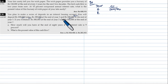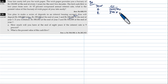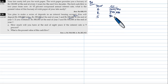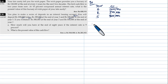Deposit rupees 2 lakh at the end of year 2, and rupees 8 lakh at the end of year 5.